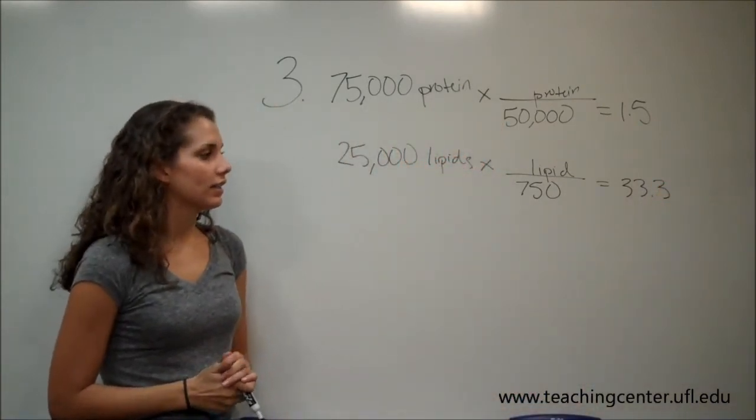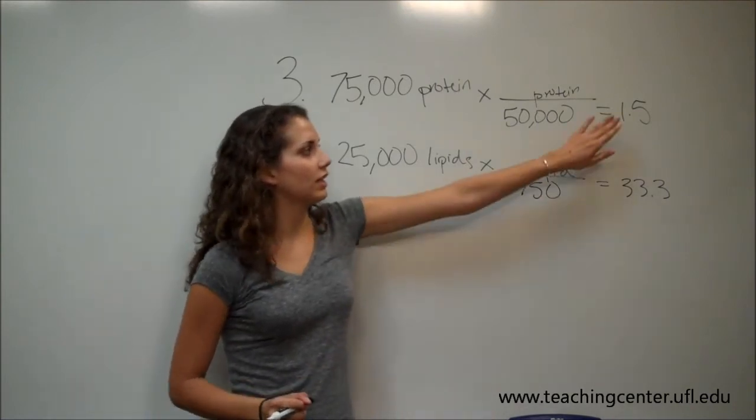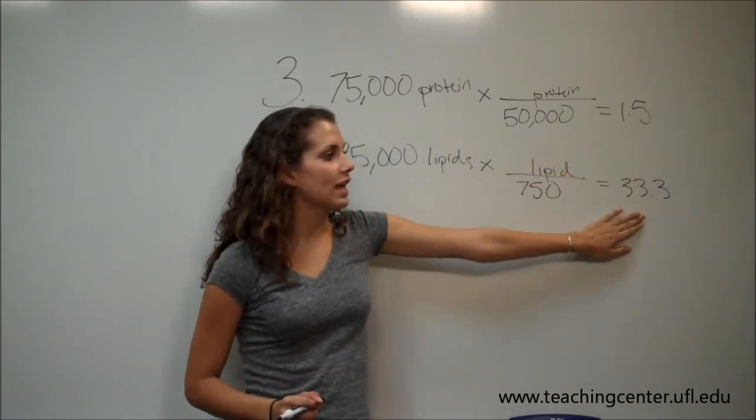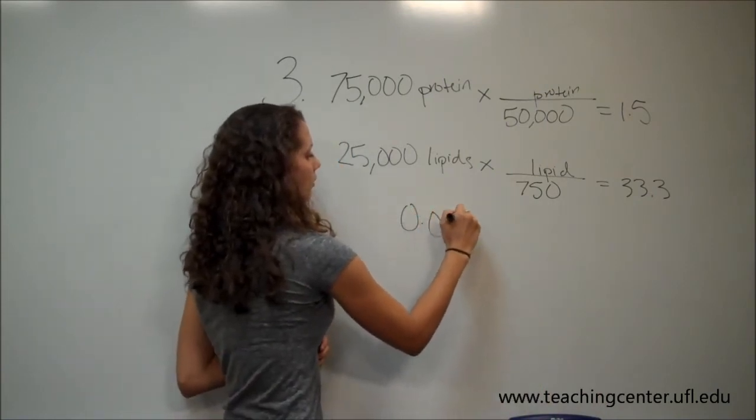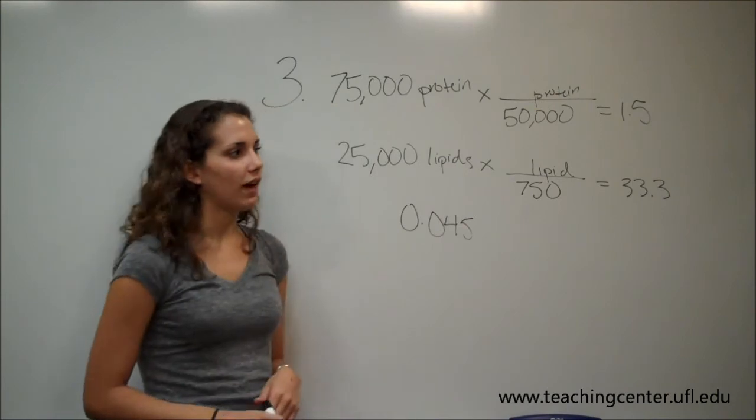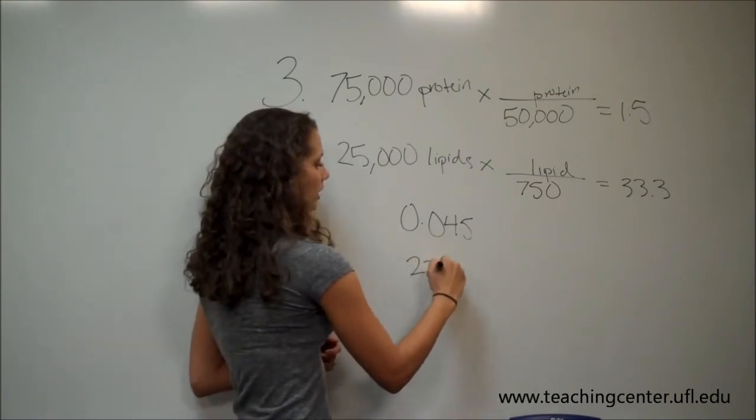Now the problem asks for the protein to lipid ratio. So we find this by dividing the amount of proteins by the amount of lipids, and we find that the protein to lipid ratio is 0.045. If you wanted to find the lipid to protein ratio, it would be 22.2.